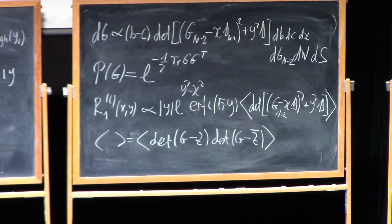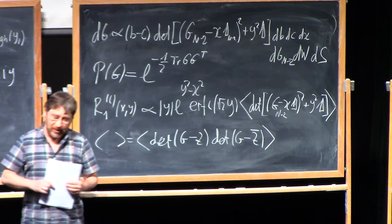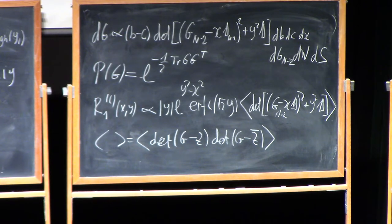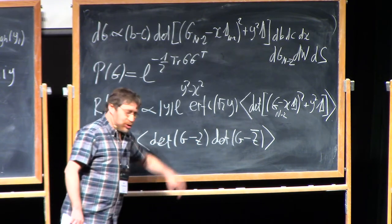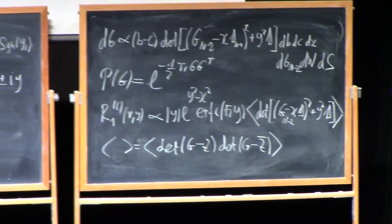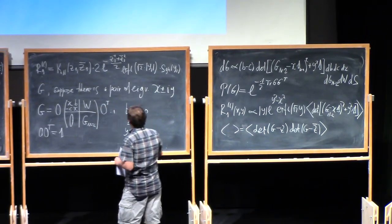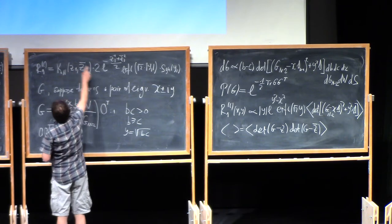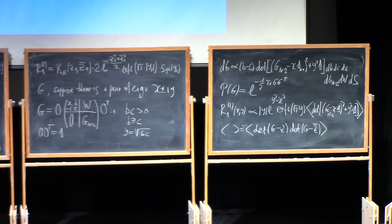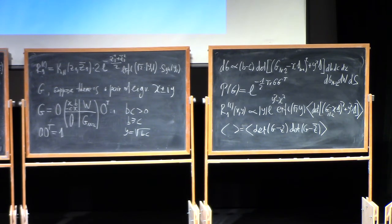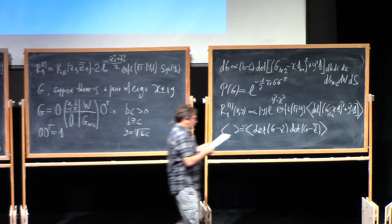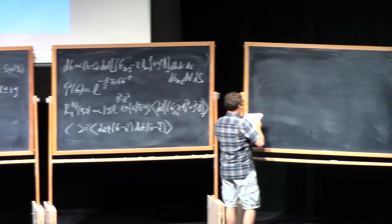One can represent each of the determinants as Gaussian integral using vectors with n anti-commuting variables, and then, in half a page, to get really this average, to calculate this average. This is a relatively simple exercise, and in this way, one obtains, really, this kernel. So, let me now write explicit expression for this kernel.